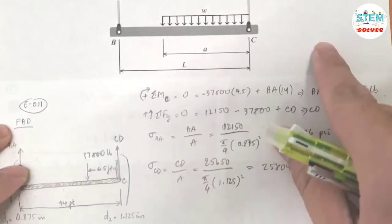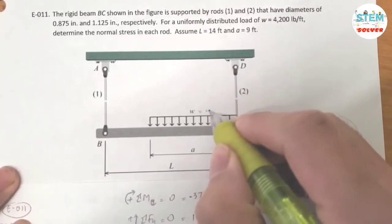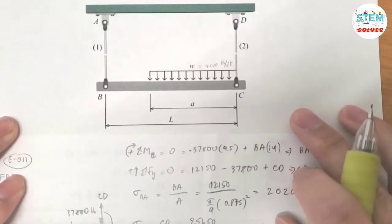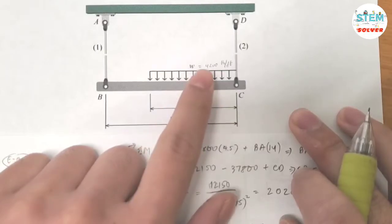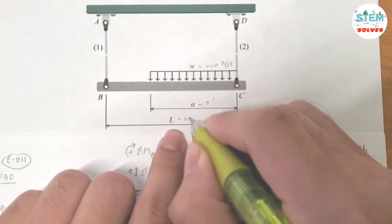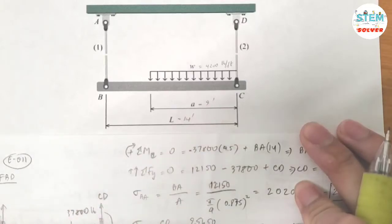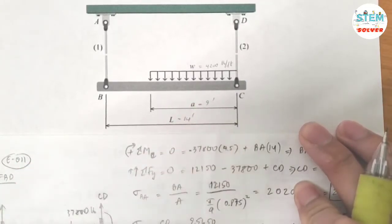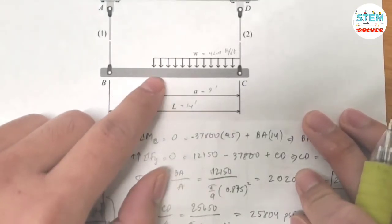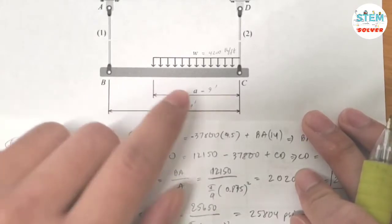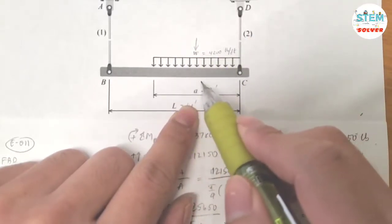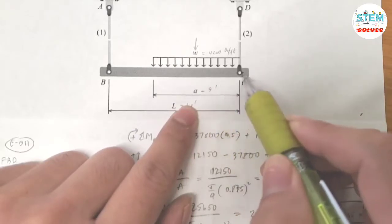So as it's stated, w equals 4200 pounds per feet. So I can calculate this force is equal to 4200 times a is 9 feet. L is 14 feet. So 4200 times 9 which gives me 37,800 pounds. And because this is a rectangular distributed load, the force is acting in the middle of the distributed load, which is 9 divided by 4, 4.5 feet away from C.